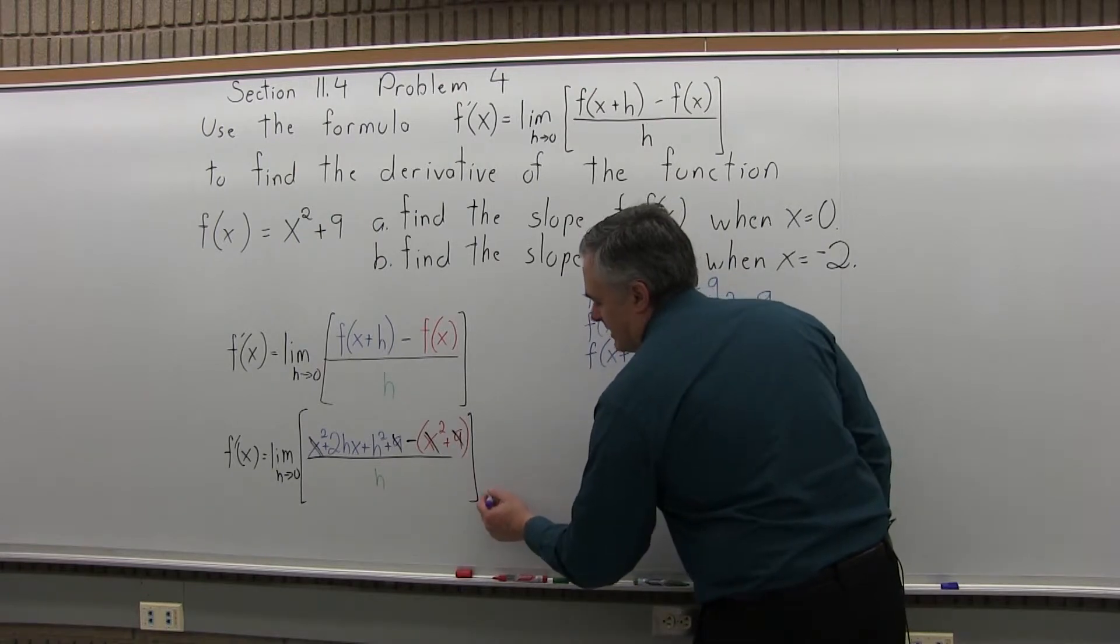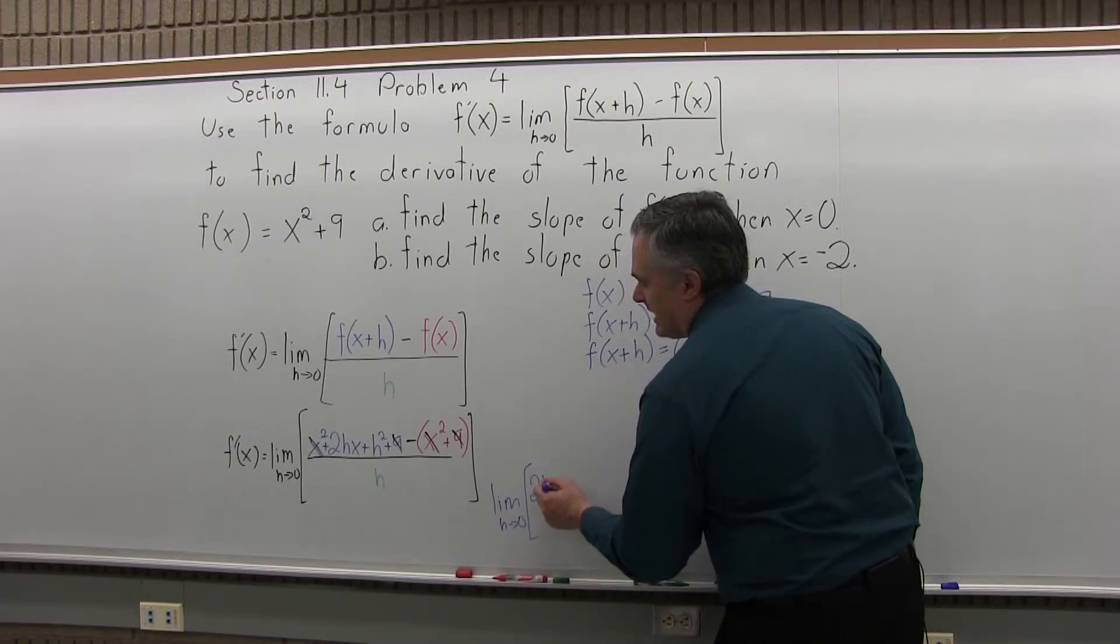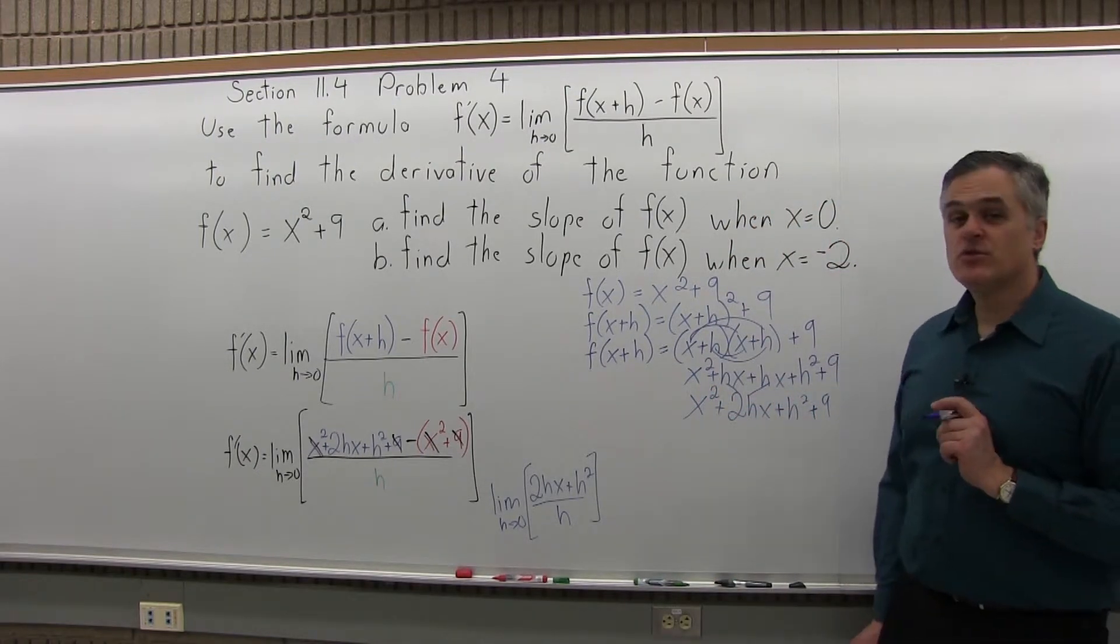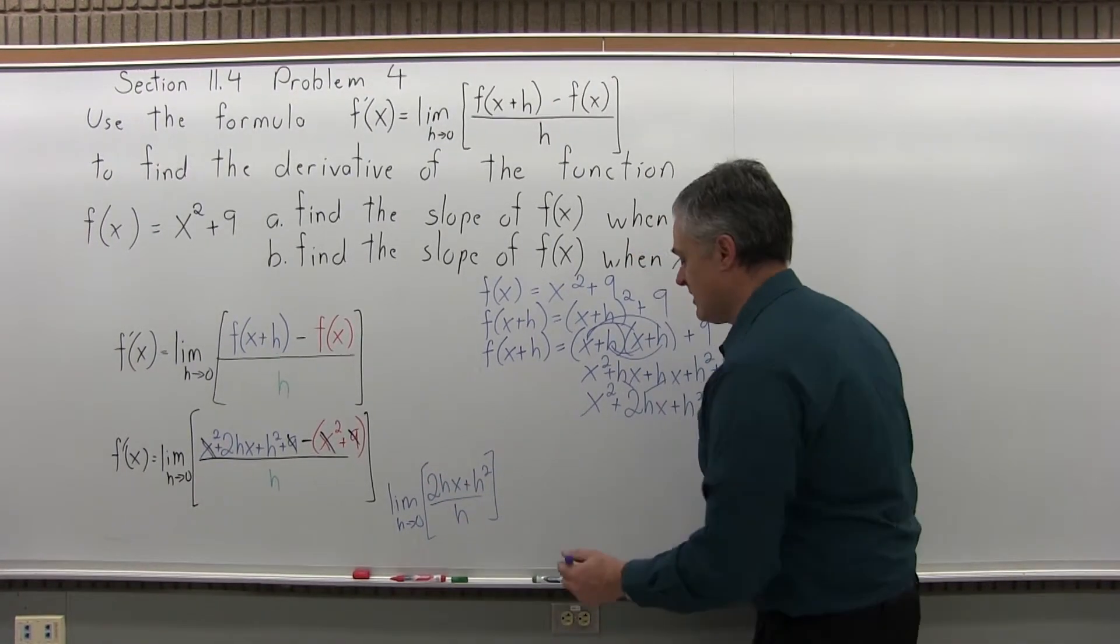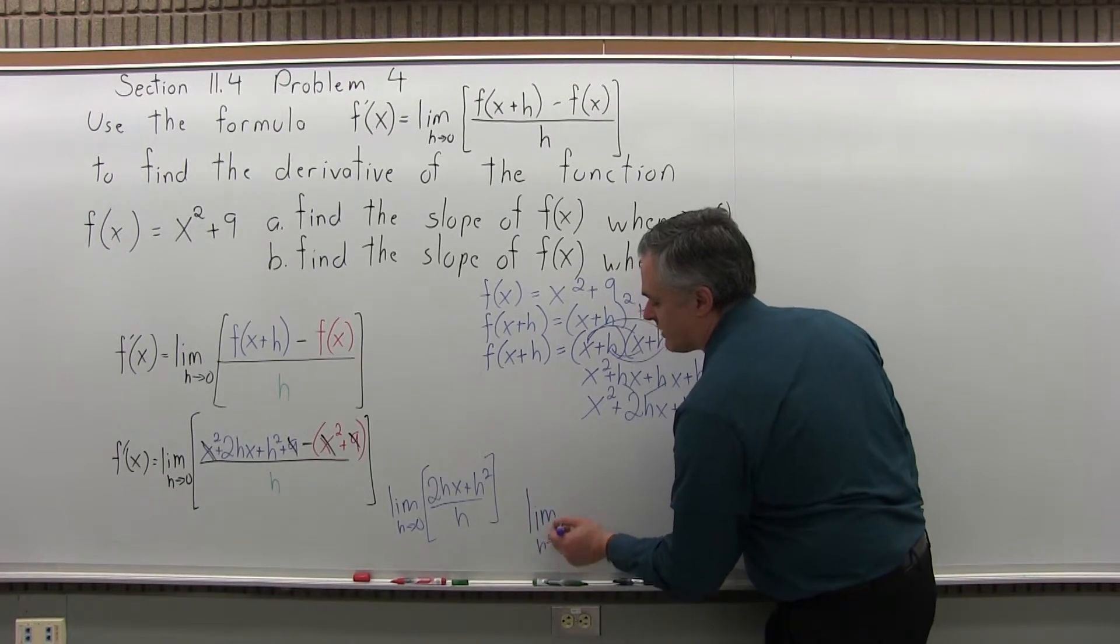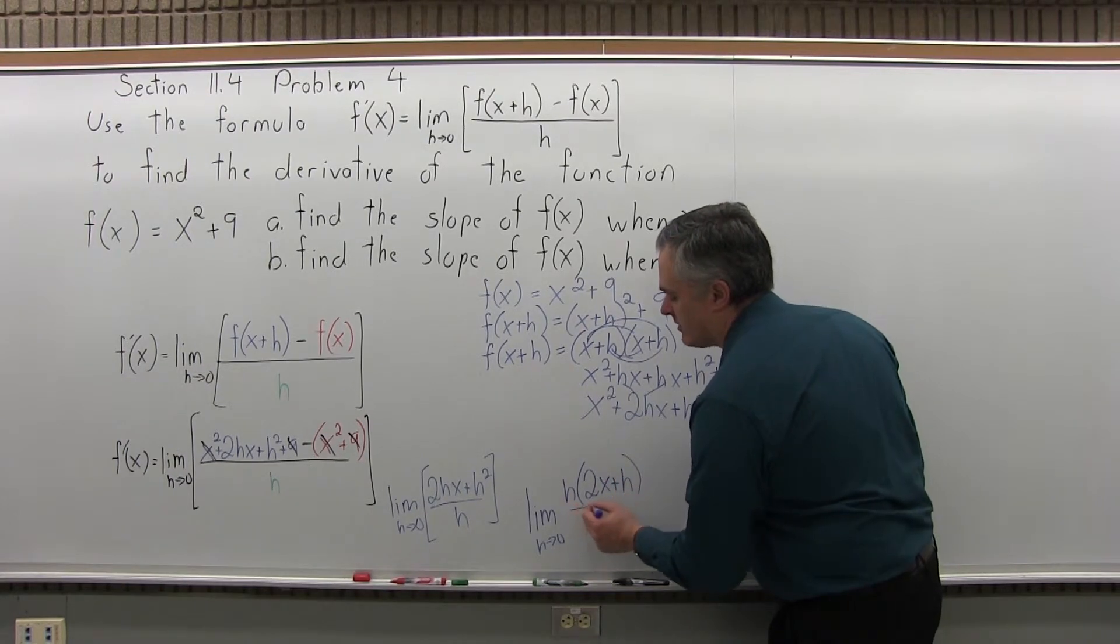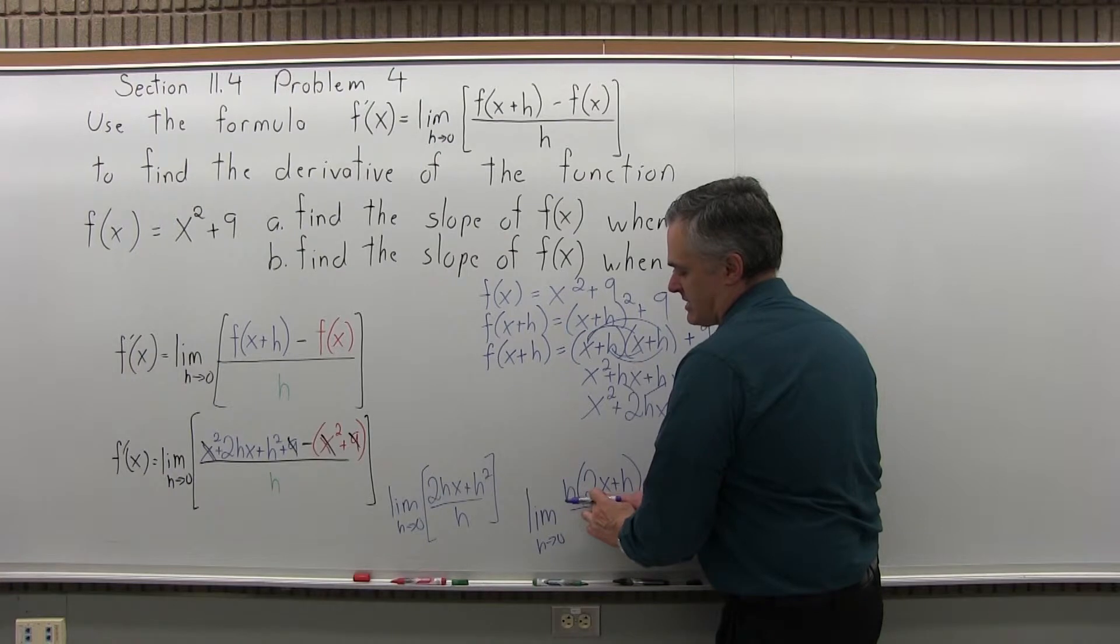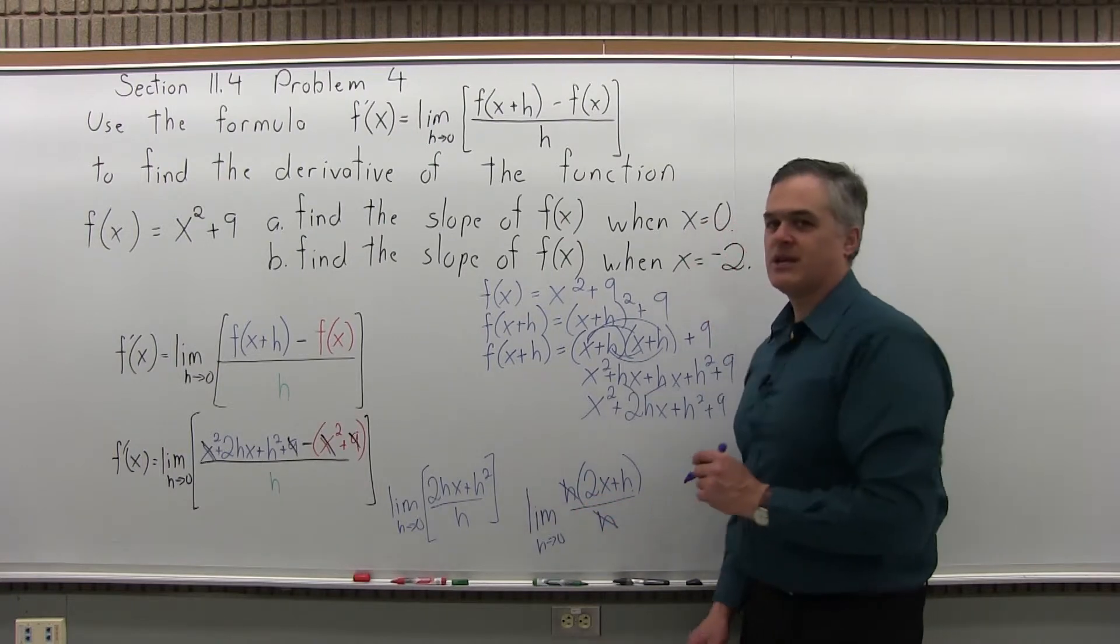So I'm taking the limit as h approaches zero of (2hx + h²)/h. Every piece that remains in the numerator has an h, so I can factor it out in front and use that factored h to cancel the h in the denominator. Now I want to take the limit as h approaches zero of h(2x + h)/h. When I take an h out of 2hx, I have 2x, and when I take an h out of h², I have h to the first. I can distribute the h back in, but now that I have it pulled in front of the parentheses, I can use it to cancel the h in the denominator.